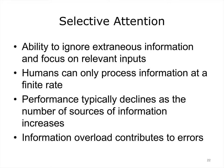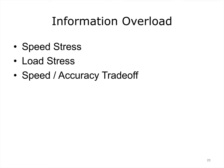We have the ability to ignore extraneous information and focus on relevant information. However, humans can only process information at a finite rate, and performance typically declines as the number of sources of information increases. Information overload is a common cause of performance errors. If you're under pressure to increase the pace of your performance, or if you're burdened by a heavy information load, the quality or accuracy of performance is likely to degrade. There is a speed-accuracy trade-off: as you increase your speed of performance beyond a certain threshold, you increase the probability that the quality or accuracy of your work will degrade. Think of physicians and nurses in an emergency room — they may be working with several critical patients at the same time, which is a high-stress situation often demanding rapid action. In addition, this is an environment with a high rate of interruptions. These factors could contribute to errors.